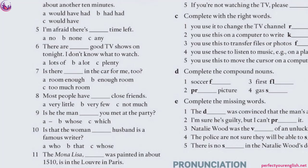Number 8: 'Most people have very few close friends.' 'Very little' and 'not much' are wrong because we're talking about people — 'friends' refers to people and is countable. 'Few' is used for countables. 'Much' and 'little' are not used for countable nouns.